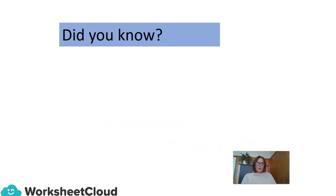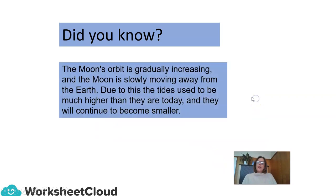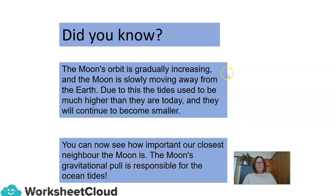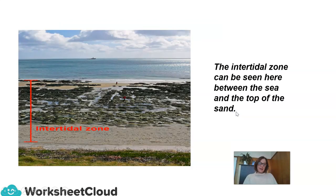Did you know, Grade 7s, that the Moon's orbit is gradually increasing? The Moon is slowly moving away from the Earth. Due to this, the tides used to be much higher than they are today, and they will continue to become smaller. You can now see how important our closest neighbour, the Moon, is — the Moon's gravitational pull is responsible for the ocean's tides.